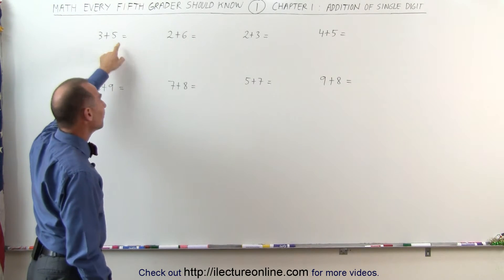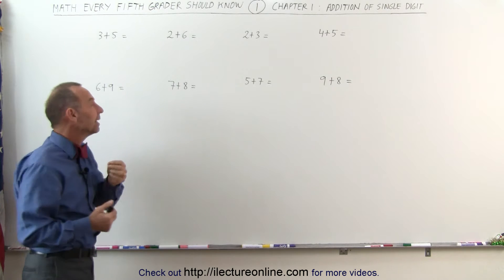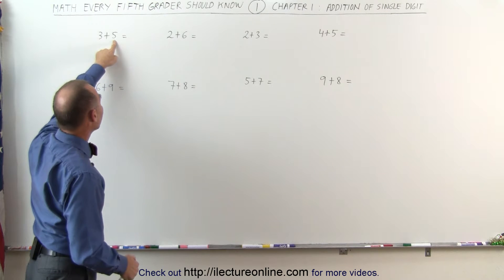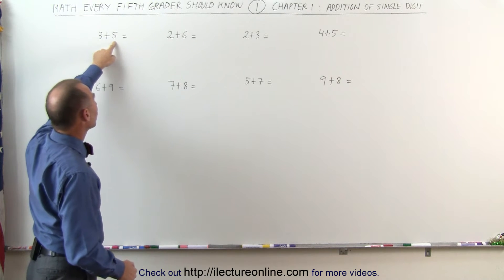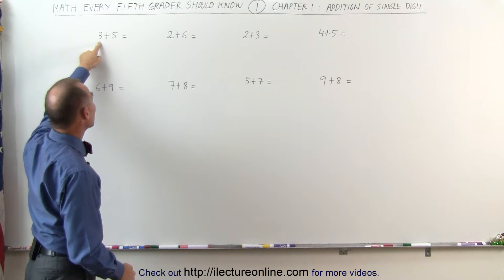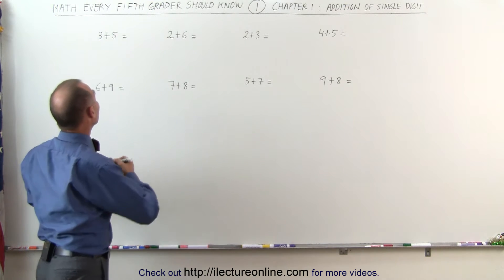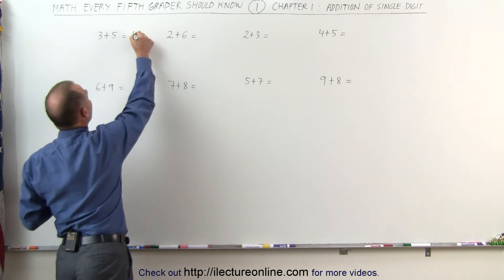In this case, we have 3 plus 5, and the way we tend to look at it, it's easier to think of the larger number, and then we add the smaller number to it. Starting with 5, add 3 more to that, that's 6, 7, and 8. The total of that is 5 plus 3 equals 8.